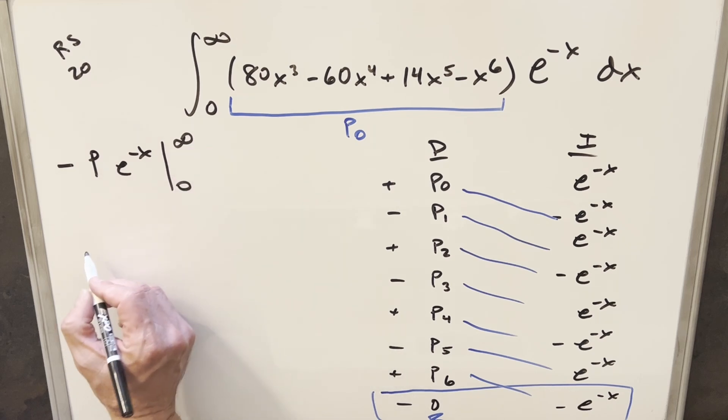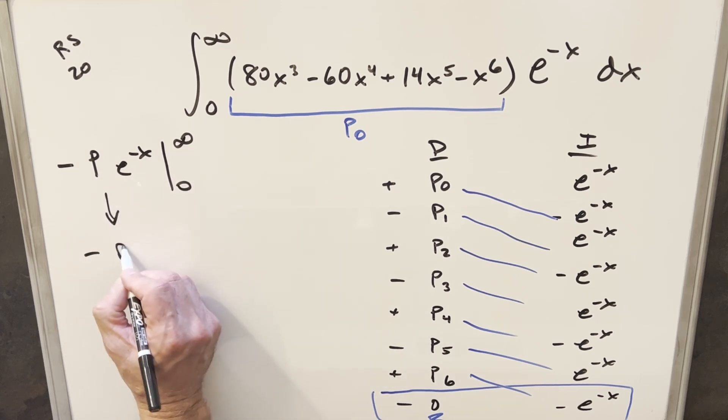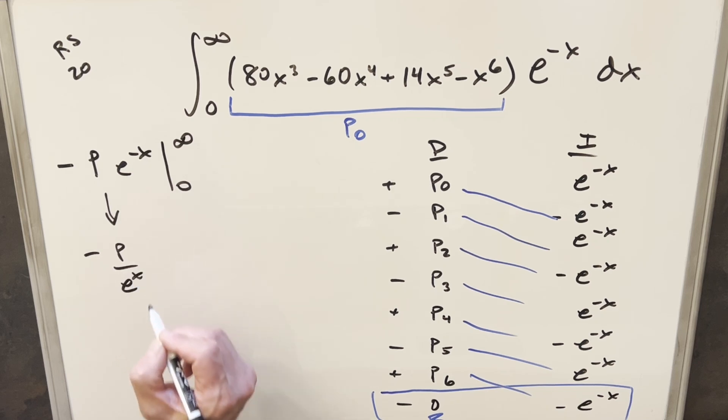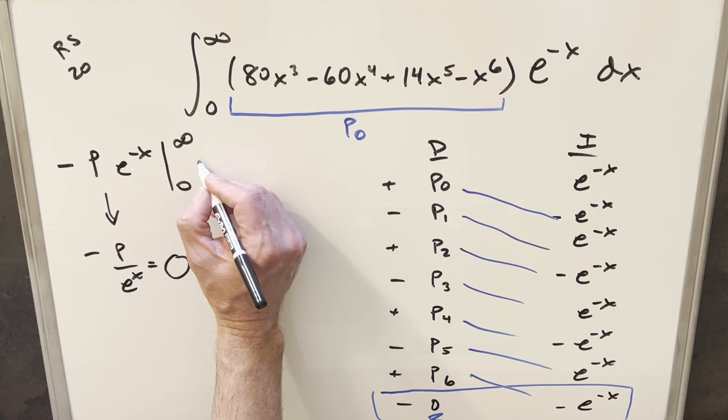Now evaluating this at infinity, what we can do is actually look at this as minus P. We can take this into the denominator as minus P over e^x. Now you can do this as a limit, evaluating limit as x approaches infinity, but we can just kind of do it by looking at it because we have an exponential in the denominator. When you plug in infinity here, that's going to be growing much faster than any polynomial. So it's going to happen in every single one of these cases. This first part is always going to be zero.